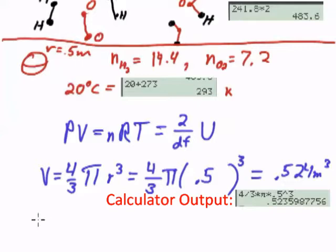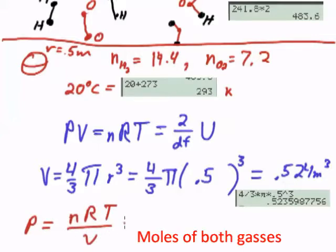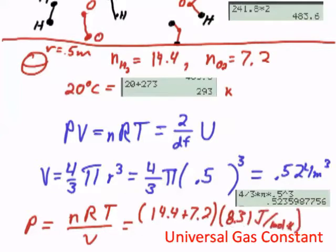And I think we'll just take, we want to solve that for pressure. So P equals nRT over V, which is the number of moles of hydrogen plus the number of moles of oxygen, times R,